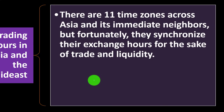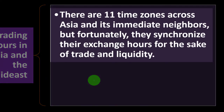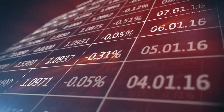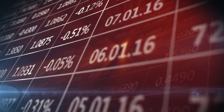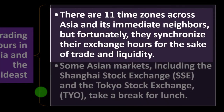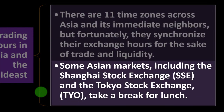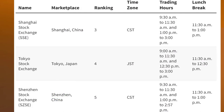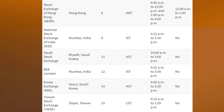Trading hours in Asia and the Mid-East: there are 11 time zones across Asia and its immediate neighbors, but fortunately they synchronize their exchange hours for the sake of trade and liquidity. The capacity to synchronize to some degree obviously makes things easier for trading to take place. Some Asian markets, including the Shanghai Stock Exchange (SSE) and the Tokyo Stock Exchange (TYO), take a break for lunch. There are additional tables of Asian exchanges where you can look at the specific hours.